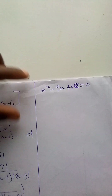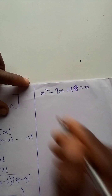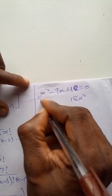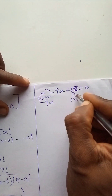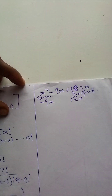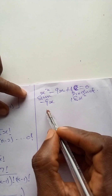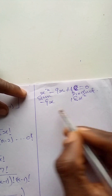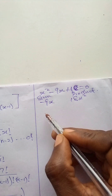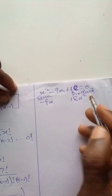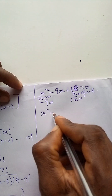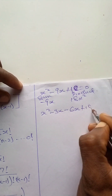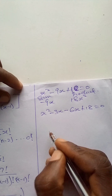We will solve this using the factorization method. The sum is minus 9x and the product is 18x squared. Two numbers that multiply to give 18 and add to give minus 9 are 6 and 3. So we have x squared minus 3x minus 6x plus 18 equal to 0.